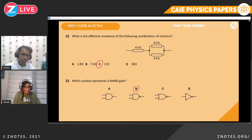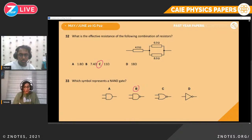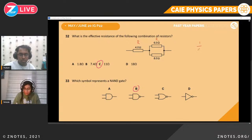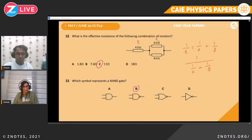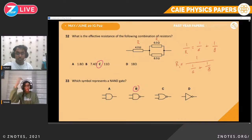Question thirty-two. What is the effective resistance of the following combination of resistors? Two resistors of 6 Ω and 8 Ω are in parallel. For the parallel combination: 1/R_parallel = 1/6 + 1/8. Flip the result to get R_parallel, then add it to the series resistor R. The answer is B. Note: the answer labels may have been shifted in the presentation, so verify by calculation.